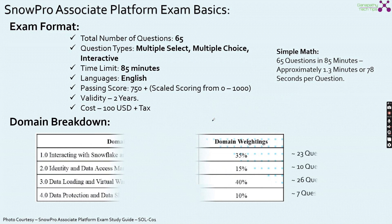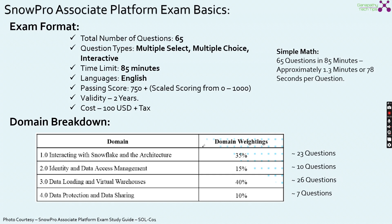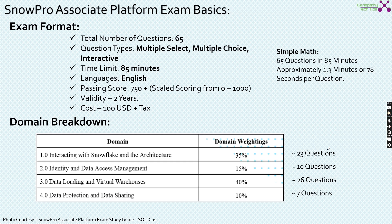How about the exam breakdown? From the exam study guide: Interacting with Snowflake and Architecture is 35 percent; Identity and Data Access Management is 15 percent; Data Loading and Virtual Warehouses is 40 percent; Data Protection and Data Sharing is 10 percent. This is an approximated number — rounding 65 questions to these percentage weightages gives the number of questions per specific area.